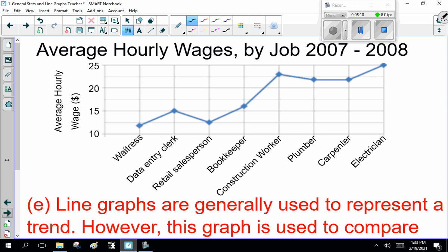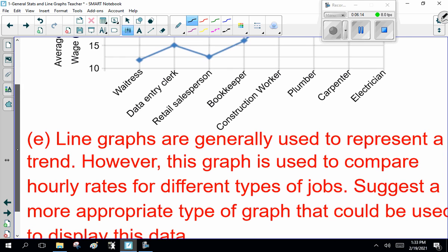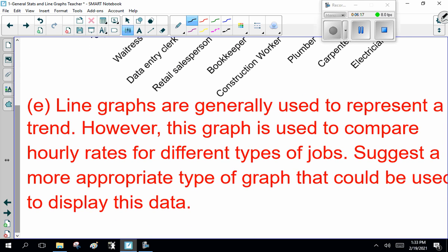Now, last question. Average hourly wages by job. So, line graphs are generally used to represent a trend. However, this graph is used to compare hourly rates for different types of jobs. Suggest a more appropriate type of graph that could be used to display this data.